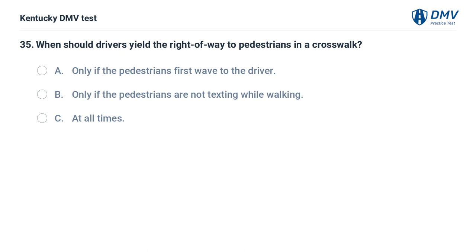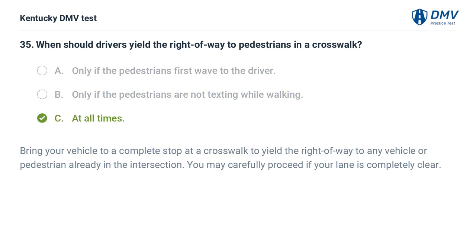When should drivers yield the right of way to pedestrians in a crosswalk? A. Only if the pedestrians first wave to the driver. B. Only if the pedestrians are not texting while walking. C. At all times. The correct answer is C, at all times. Bring your vehicle to a complete stop at a crosswalk to yield the right of way to any vehicle or pedestrian already in the intersection. You may carefully proceed if your lane is completely clear.